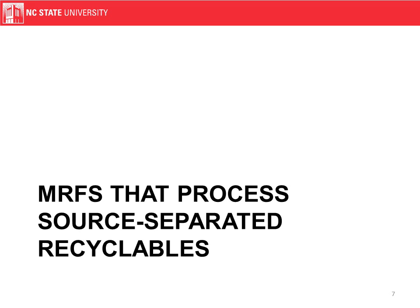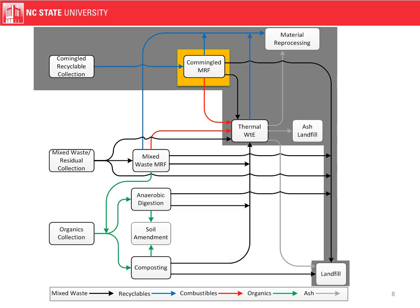We've separated our MRF types into two groups: MRFs that process or separate recyclables, and the mixed waste MRF which only accepts one stream. MRFs interact with a large part of the system — the recovered material goes to remanufacturing, it has to be collected upstream, and the residual stream could go to a waste-to-energy plant or to a landfill.